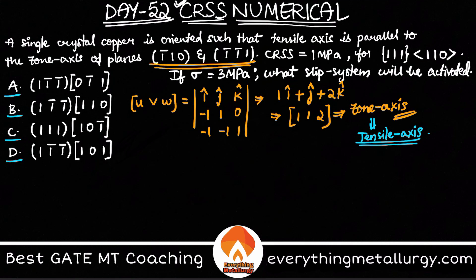Let's quickly know what is CRSS. CRSS is the minimum amount of resolved shear stress that you need on a particular slip plane so that slip will take place. Tau CRSS equals sigma cos φ cos λ. This cos φ cos λ is also called the Schmid factor.